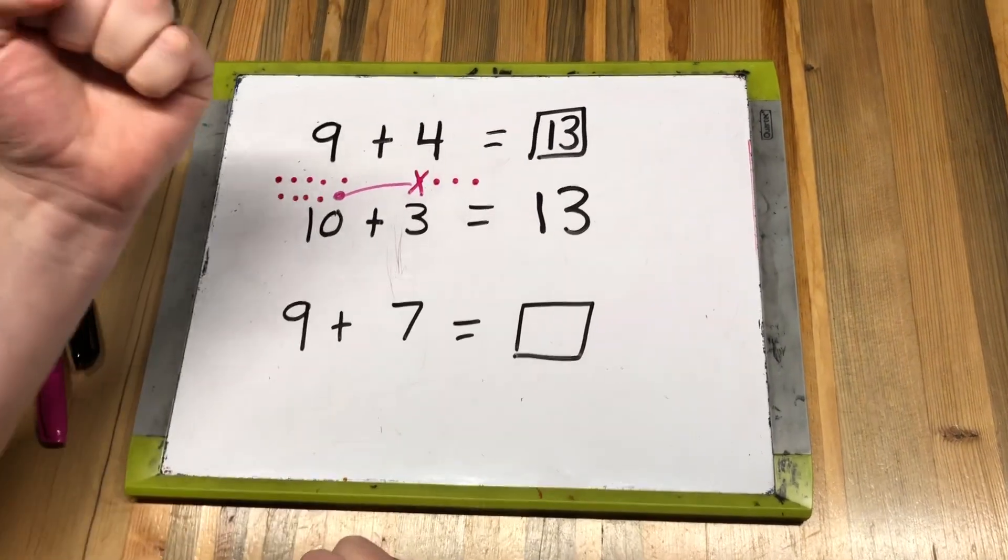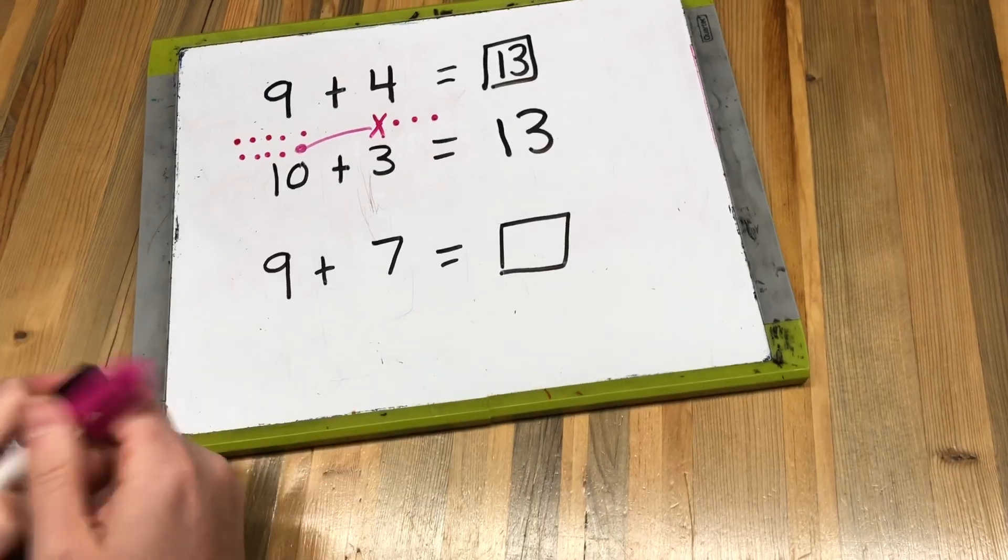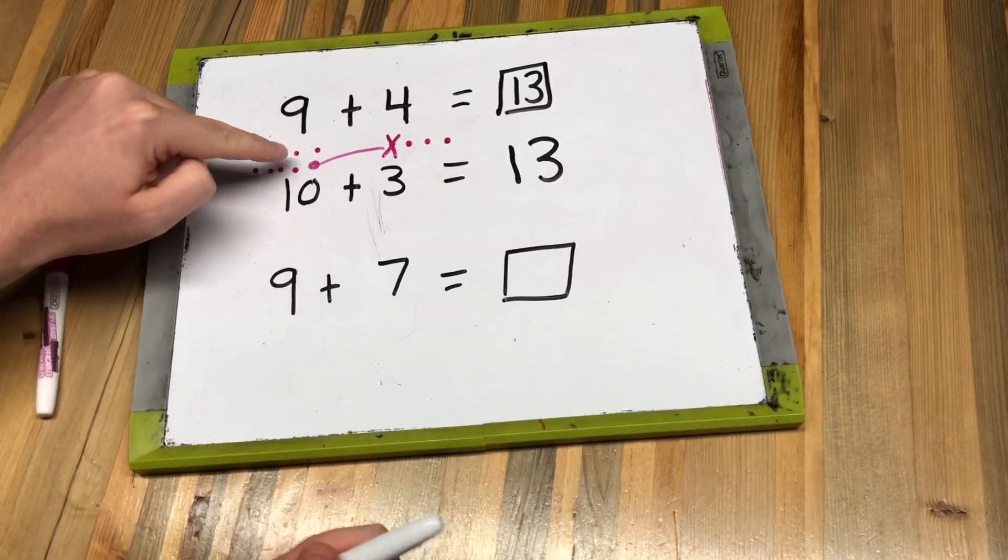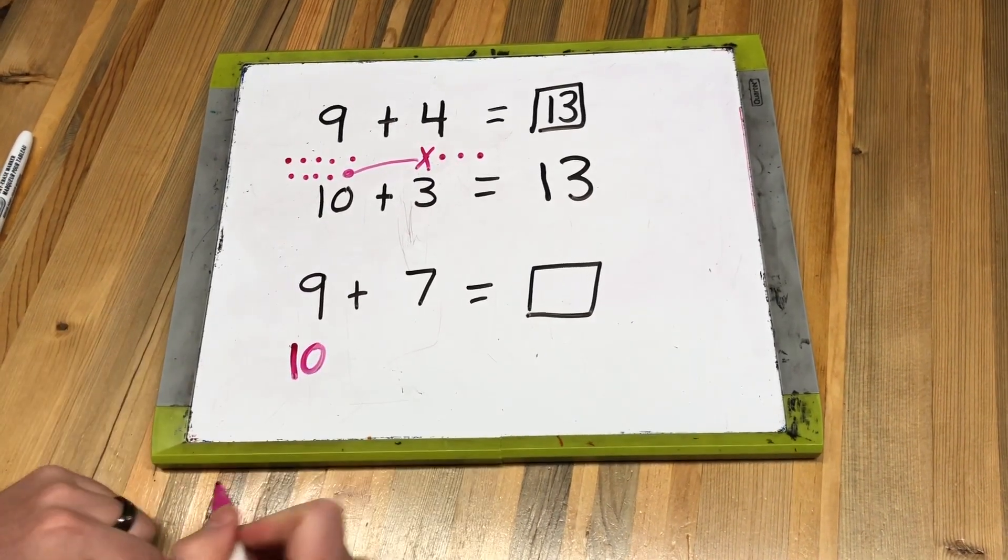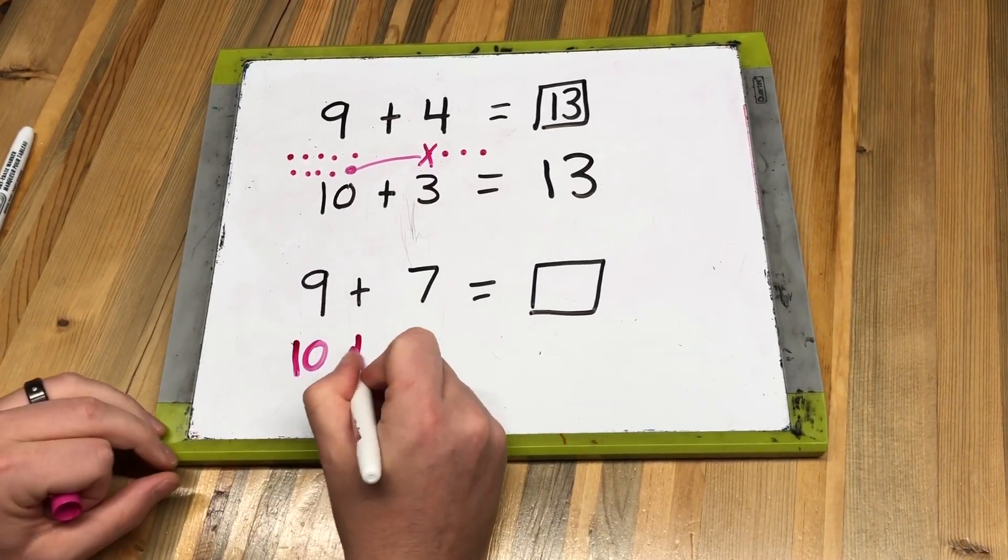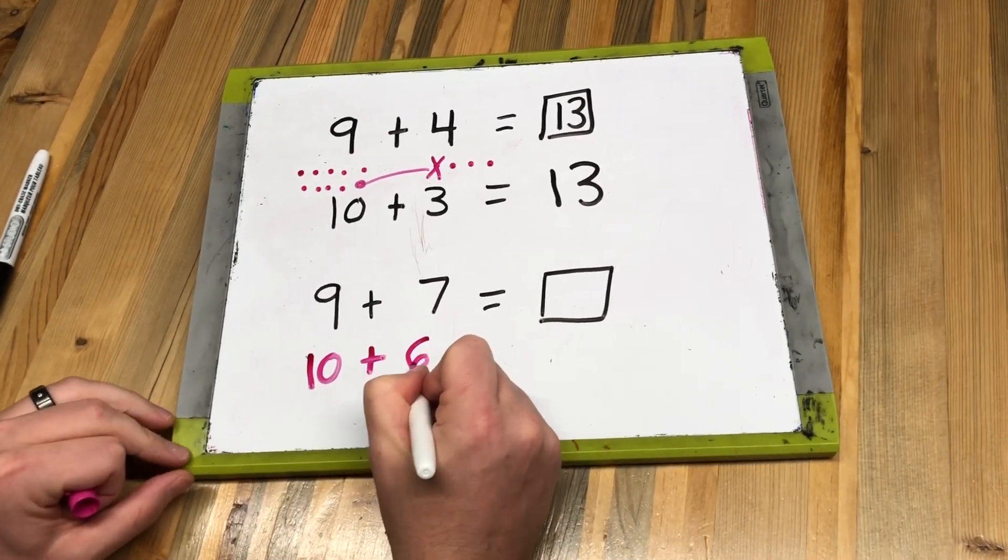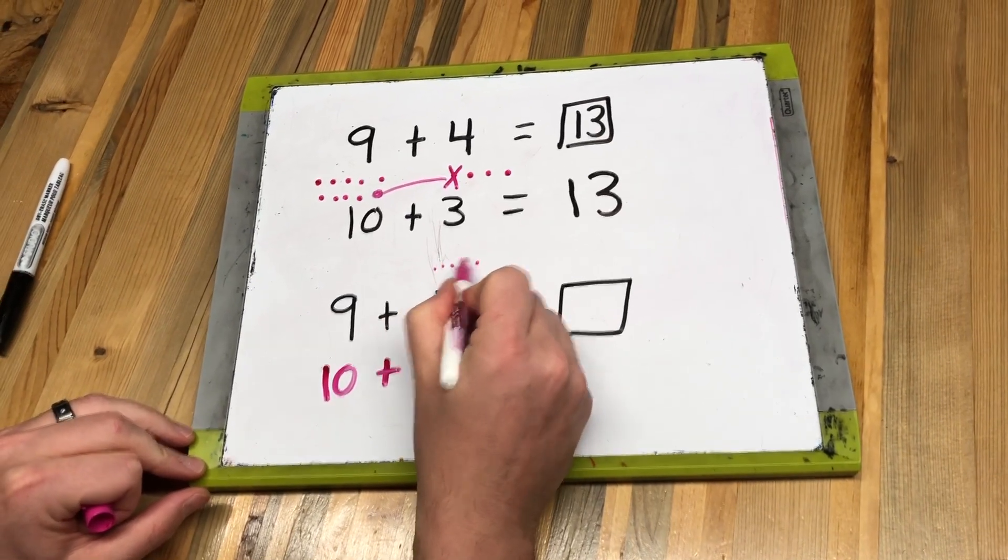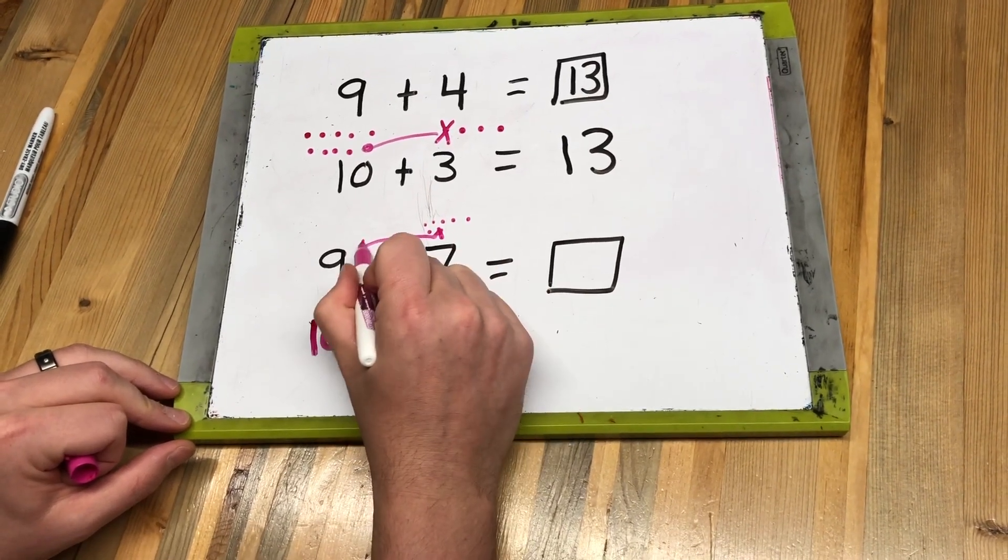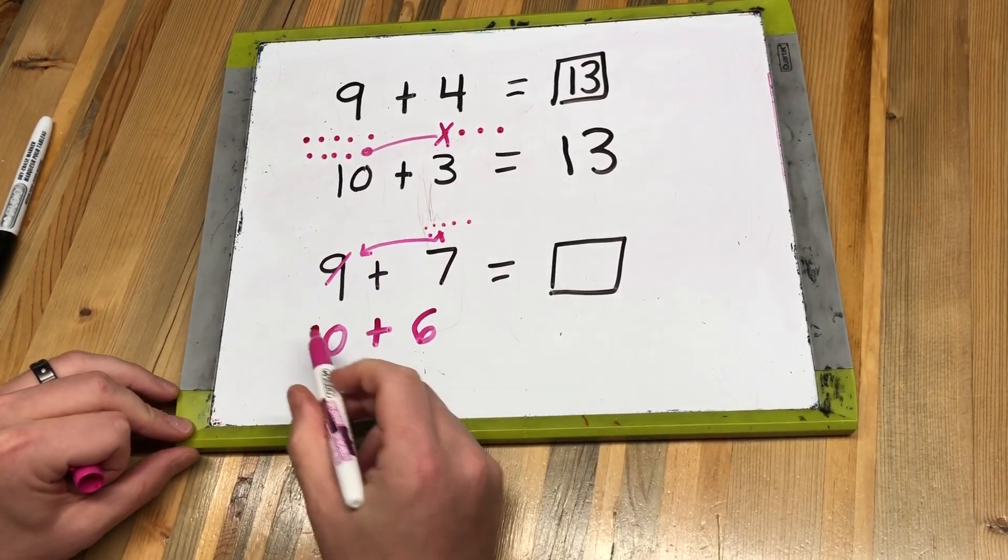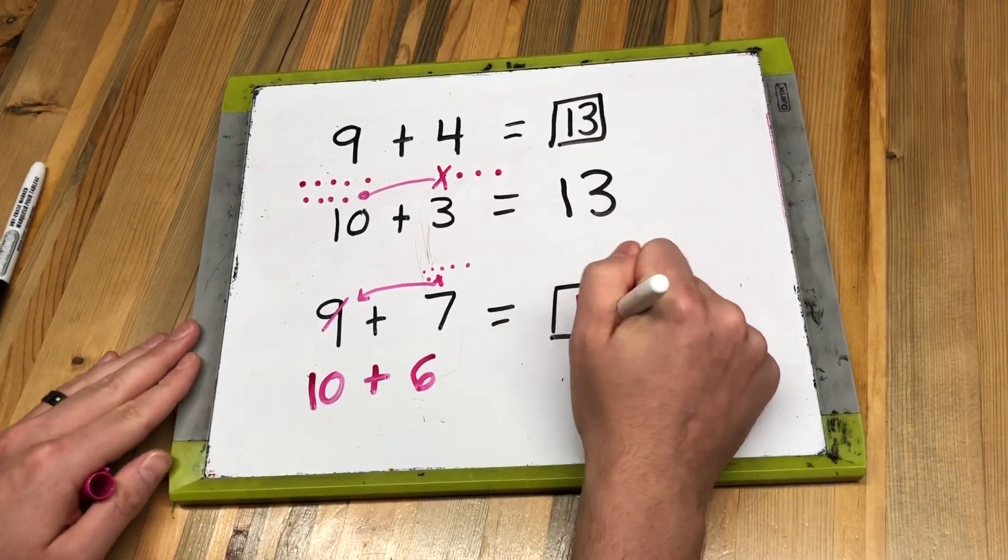Here, if I did the same thing—I don't always draw the dots—what I'm doing here is turning this nine into ten. But it's not ten plus seven anymore, it's ten plus six, because I had to take one of those seven ones and bring it over here to turn this into ten. So the number sentence I'm working with now is ten plus six, and I know really quickly that equals sixteen.